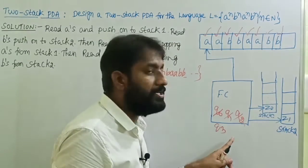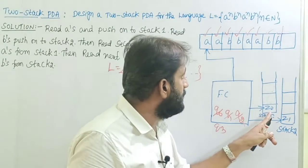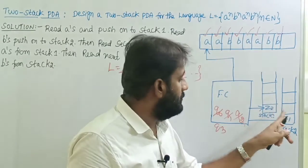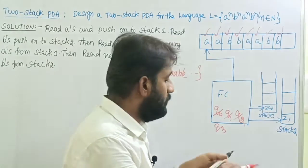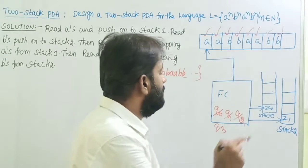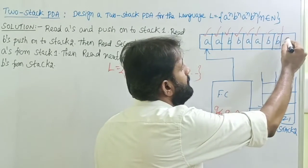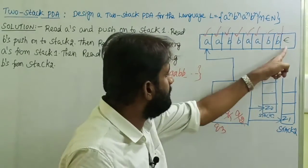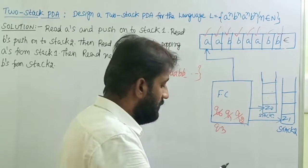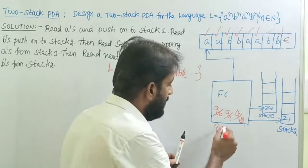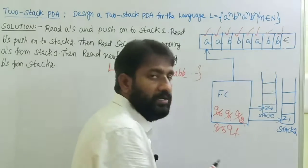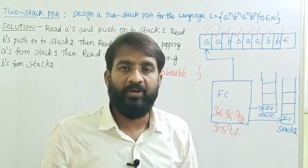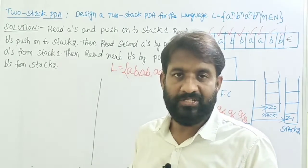Now on state q3, stack one contains only z0 and stack two contains only z1. The last element 'b' is completed — now the input is epsilon. So on q3 with epsilon, z0, z1, move to the final state. The string is accepted by the final state. Now write the transitions.